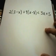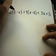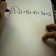Suppose I have 2(3 - x) + 4(x - 8) < 3x + 5. A long inequality. But the first thing I'm going to do is get rid of my parentheses by distributing.